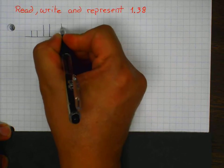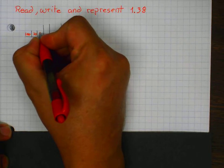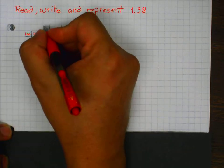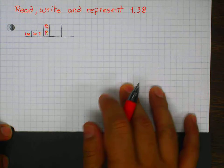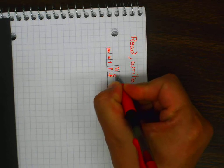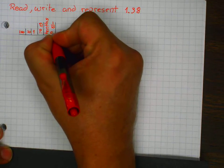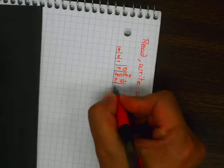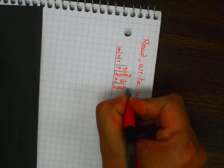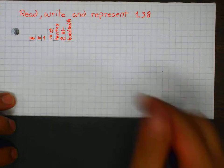My hundreds, my tens, and my ones — and the whole number. Here is my decimal point. And here is my tenths using words, my tenths represented as a fraction and my tenths represented as a decimal number. And here are my hundredths in words, represented as a fraction and as a decimal number.